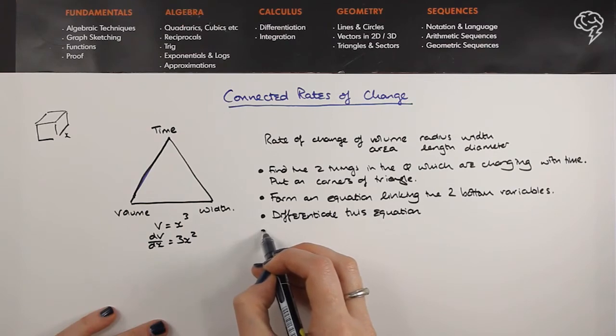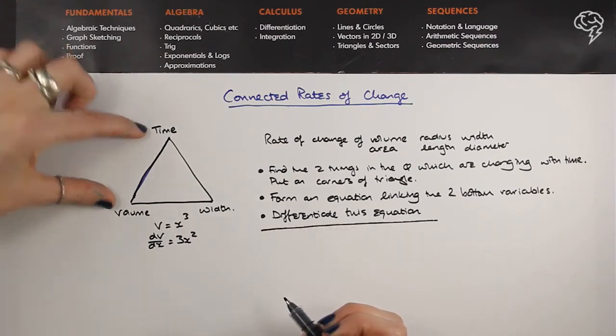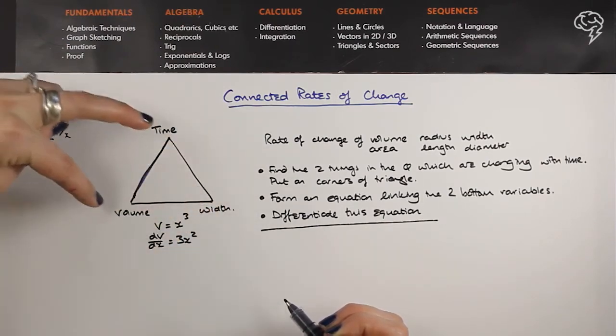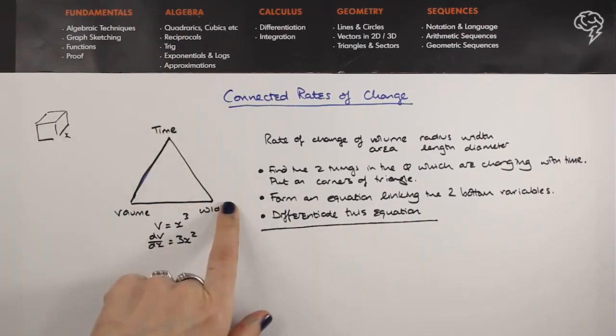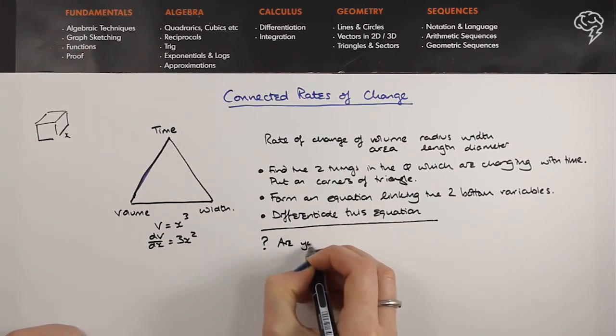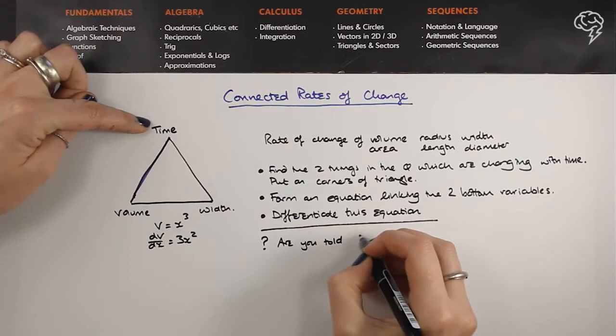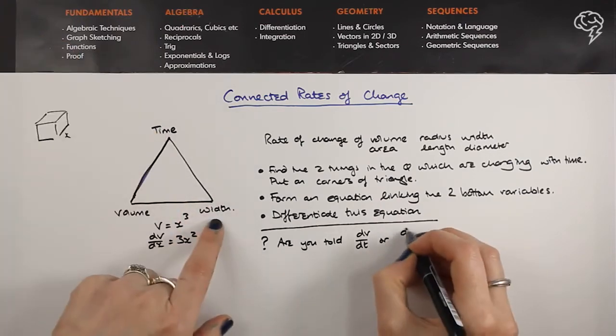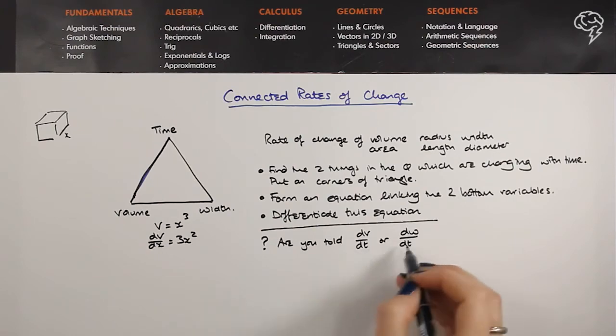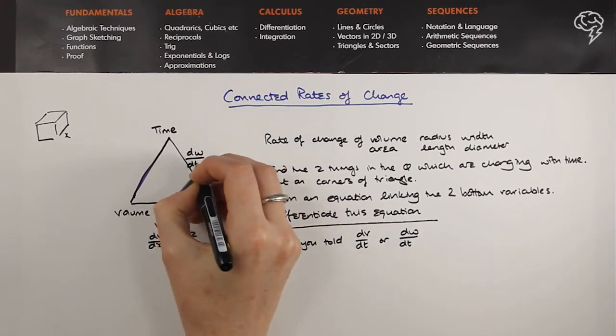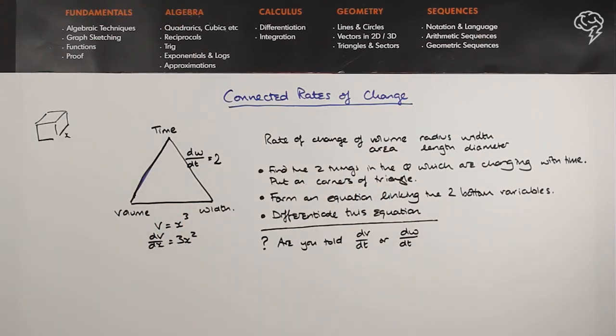And then from this point it's a slight change. Now we're going to find out which of these we're told and which we're asked for. So one of them you'll be told - rate of change of volume, or the rate at which the water is going in, something like that, or the rate of change of the width. One of them you will be told. So are you told dV/dt, that's the rate of change of the volume, or dw/dt, that's the rate of change of the width? You will definitely be told one of these two, and then whichever one you're told, put it on that side of the triangle. So for example, let's say that we're told dw/dt, so the rate of change of the width - the width is increasing at, I don't know, two centimeters per second, something like that. Put this, whichever one you're told, on the triangle.